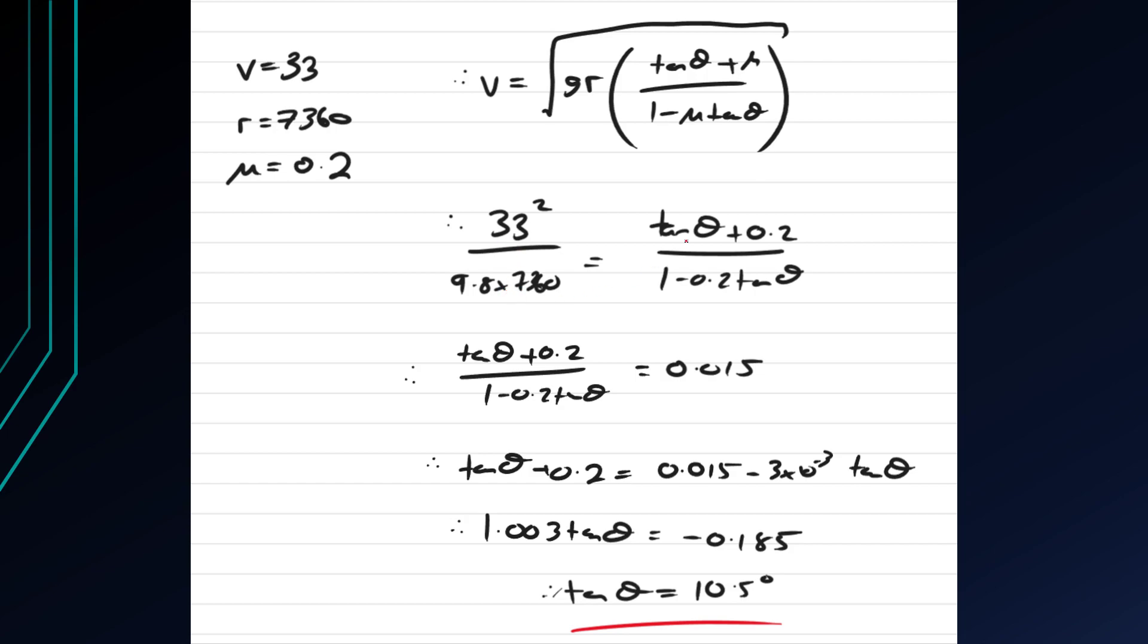which is a value we have before so that's fine, is tan theta plus 0.2 over 1 minus 0.2 tan theta.